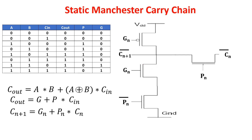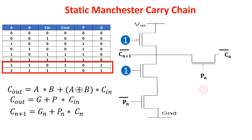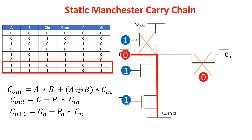Now we see the generation part, so when both A and B are at one. In this case G is at one, P at zero, and P-bar at one. The NMOSs driven by ones are closed circuits, and the output is connected with the ground, so with a logic zero. The PMOS is an open circuit as well as the pass transistor connected with the carry in. We have to invert the carry out, so we have always a one as carry out, and thus the generation part is also implemented.